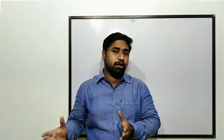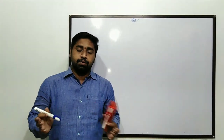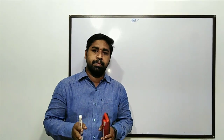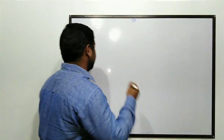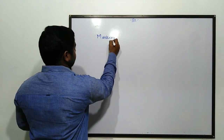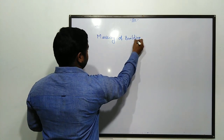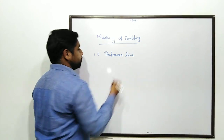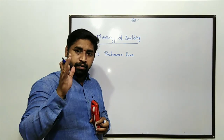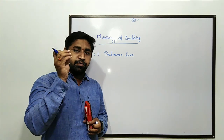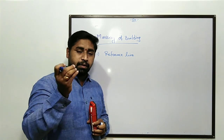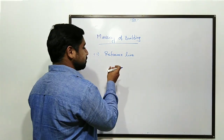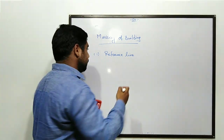When we are going to mark a building plan onto the ground, or when you are going for marking of a building onto the ground, first of all one thing we have to remember: the first thing is the reference line. When we are going to mark a building or give marking for the building, we have to look for a reference line. From that reference line only we are going to take the base line of our plan.